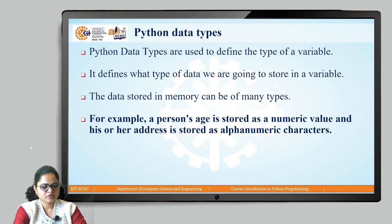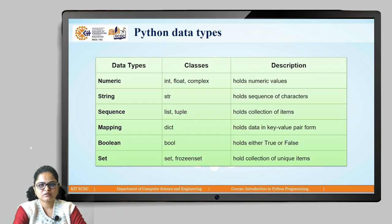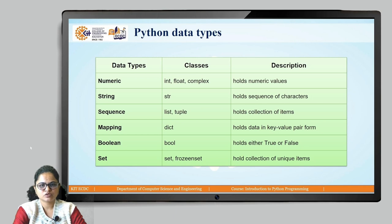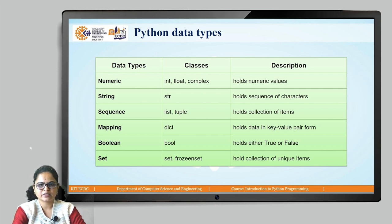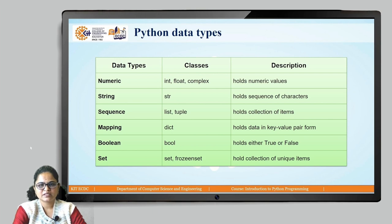Depending on the attribute type, we can have different data types in Python. These are the data types available in Python: first is the numeric data type which holds numeric values. There are three types — integer, which stores whole numbers; float, which stores real numbers with a decimal point; and complex numbers. The second data type is string, which holds a sequence of characters, and 'str' is used to define strings. The third data type is sequence, which holds a collection of items — list and tuple are the sequence data types.